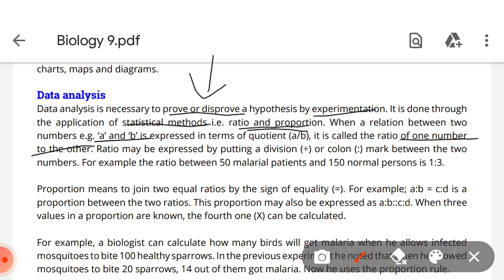Ratio can be expressed by putting the division or colon mark between the numbers. You can do the colon marks or you can do the division sign. For example, the ratio between 50 malarial patients and 150 normal persons is 1:3.